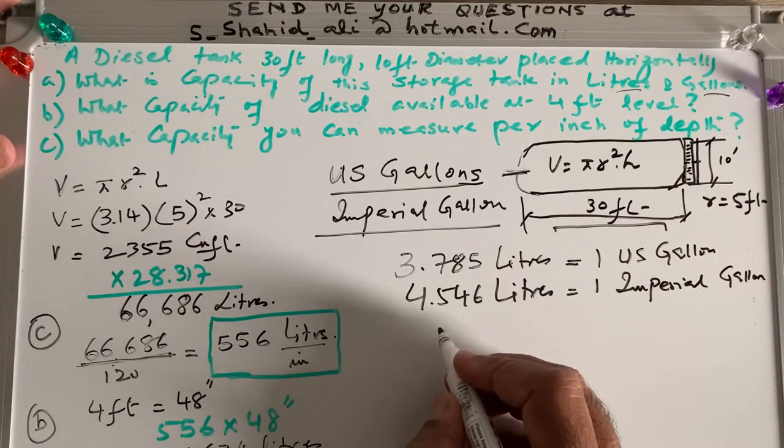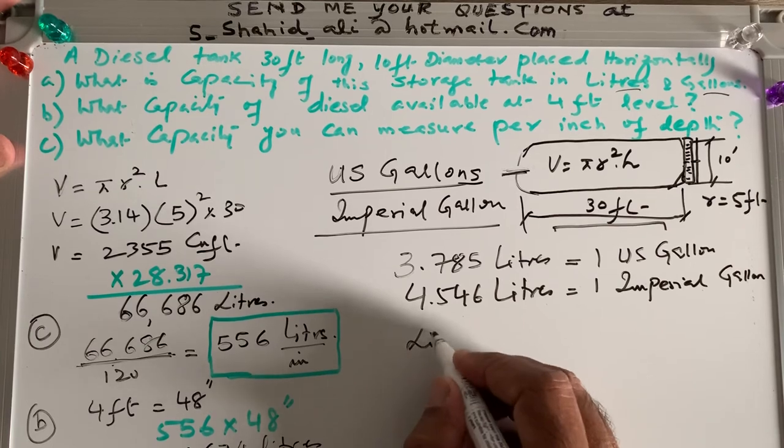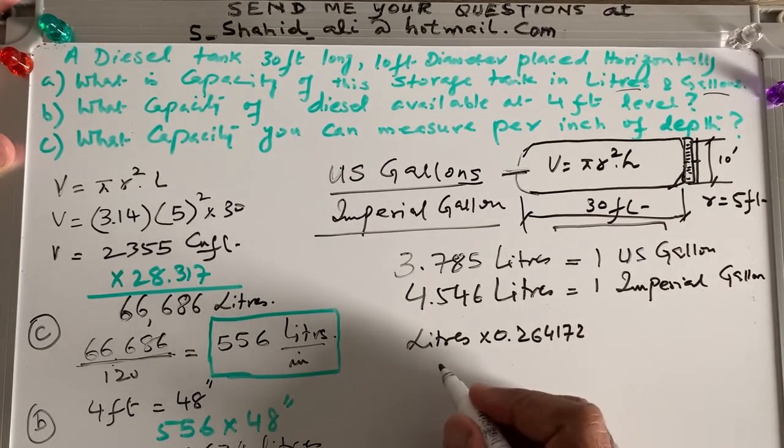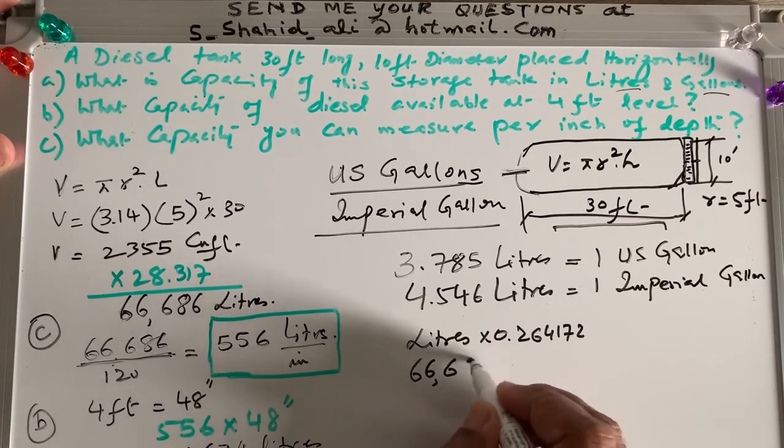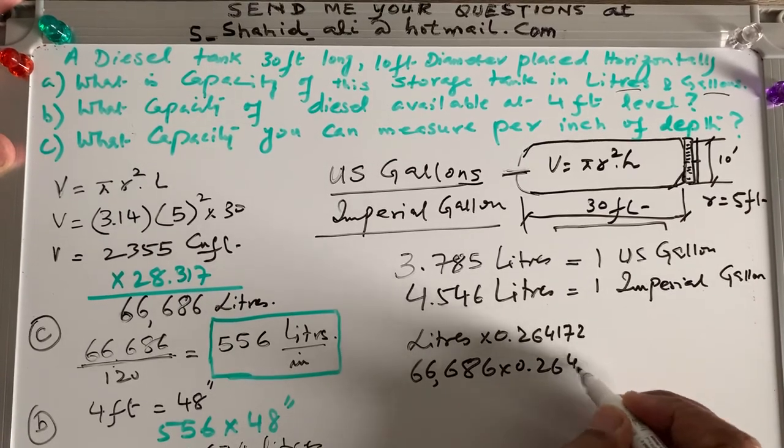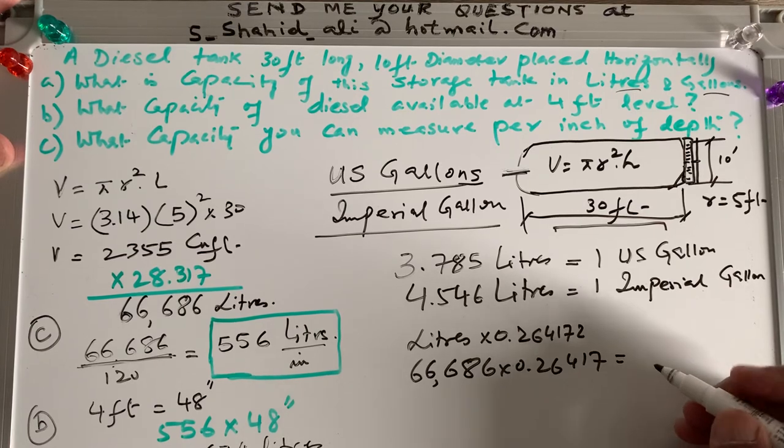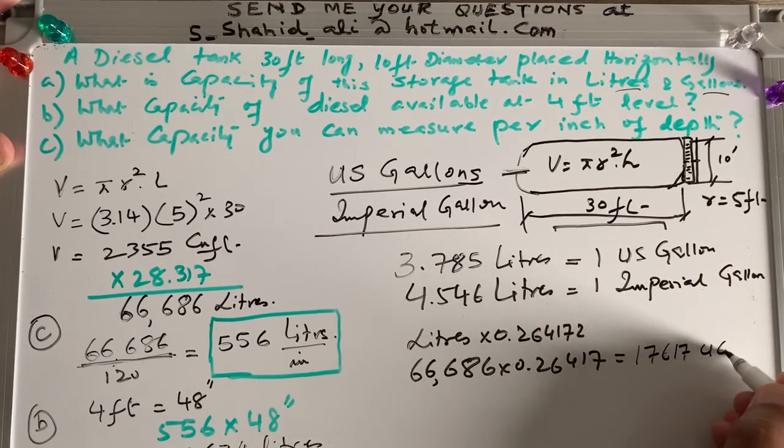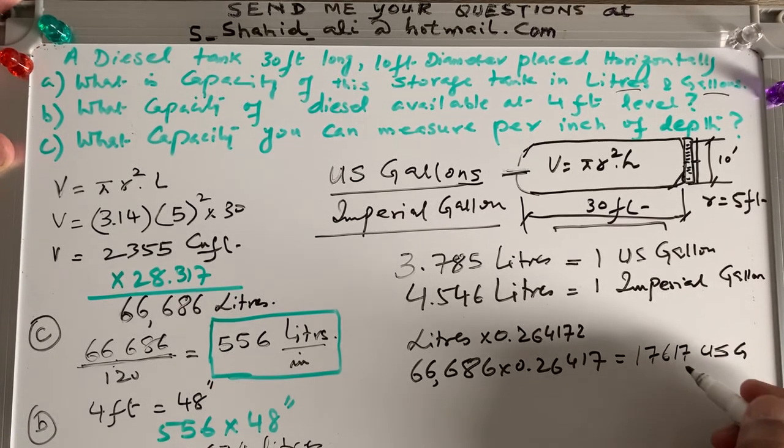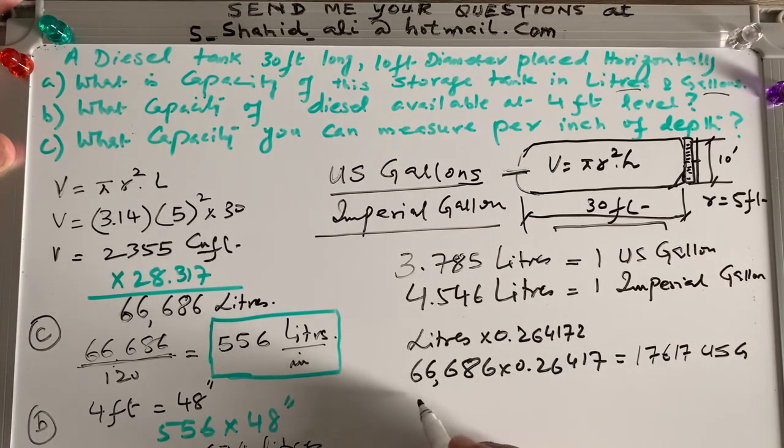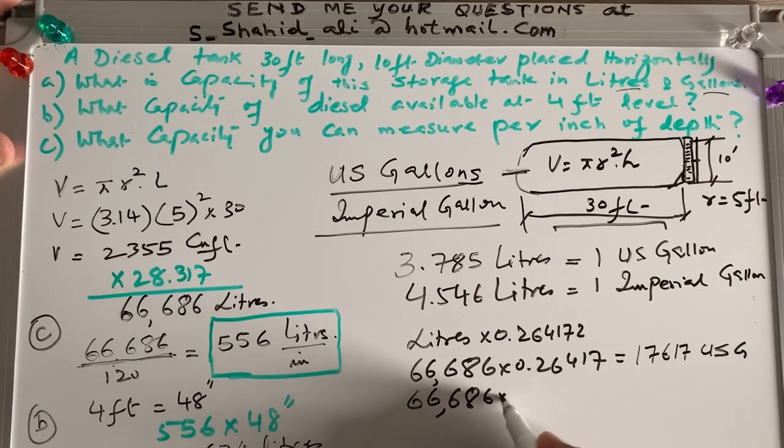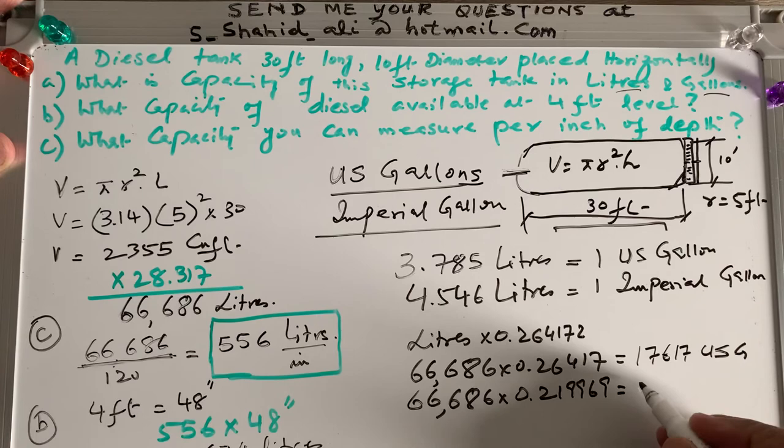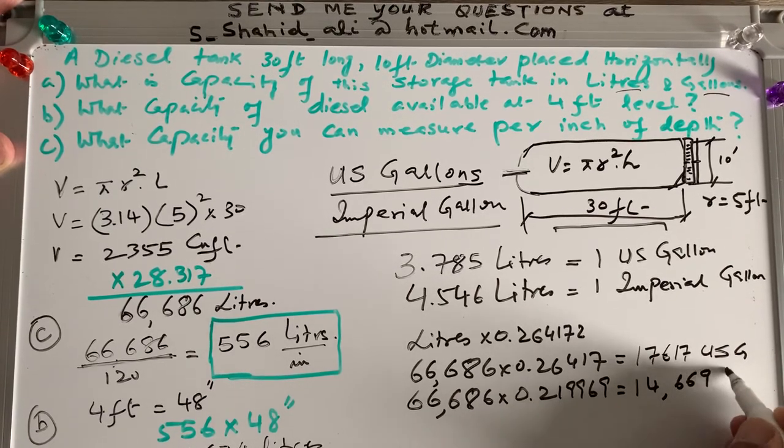So you have to remember these two conversion factors. Or if you do not want to remember this, then you can remember that if you want to convert liters into US gallon, you have to multiply liters by 0.264172 to get US gallons. So if I have total capacity of 66,686 times 0.264172, so I will be getting my US gallon capacity. And my US gallon capacity is 17,617 USG. This is my US gallon.